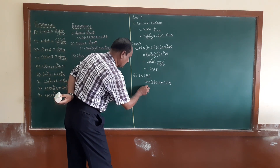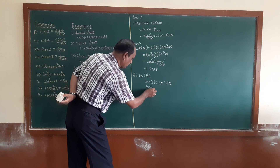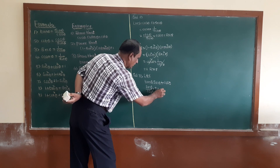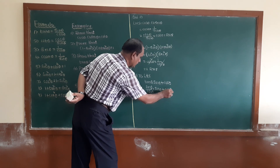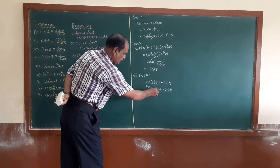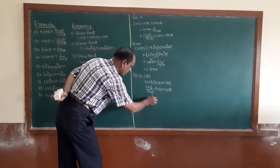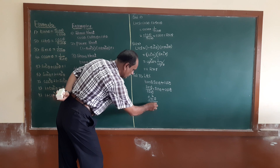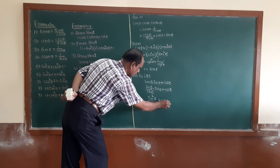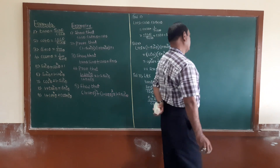So tan theta equals sine theta divided by cos theta, and then multiplied by sine theta, plus cos theta. This gives sine squared theta divided by cos theta, plus cos theta. Next, in the denominator we need to combine these terms.